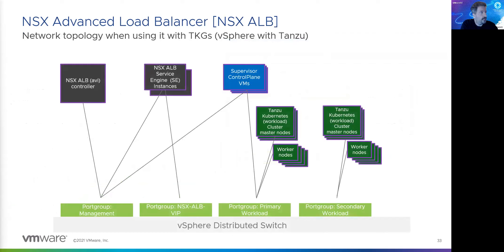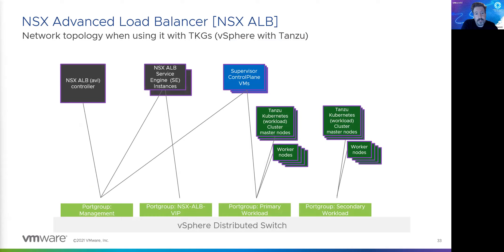NSX-ALB is very flexible — it's just a bunch of VMs, so you're flexible in where you place which bits. It also scales more efficiently than NSX-T with its edges, in my opinion. If it runs on a standard VDS switch, you don't need anything else. It's a very nice alternative for load balancing with TKGS and TKGM — but it does not work with TKGI.